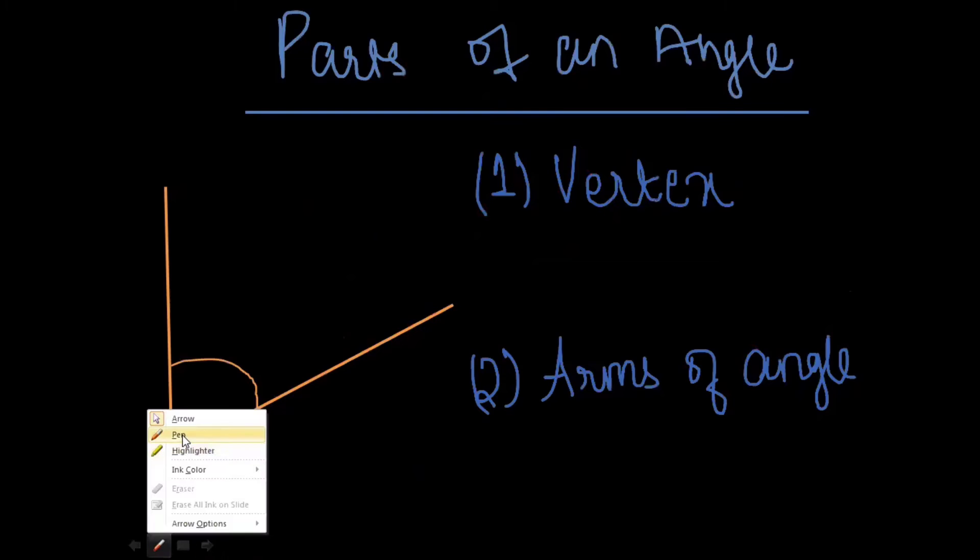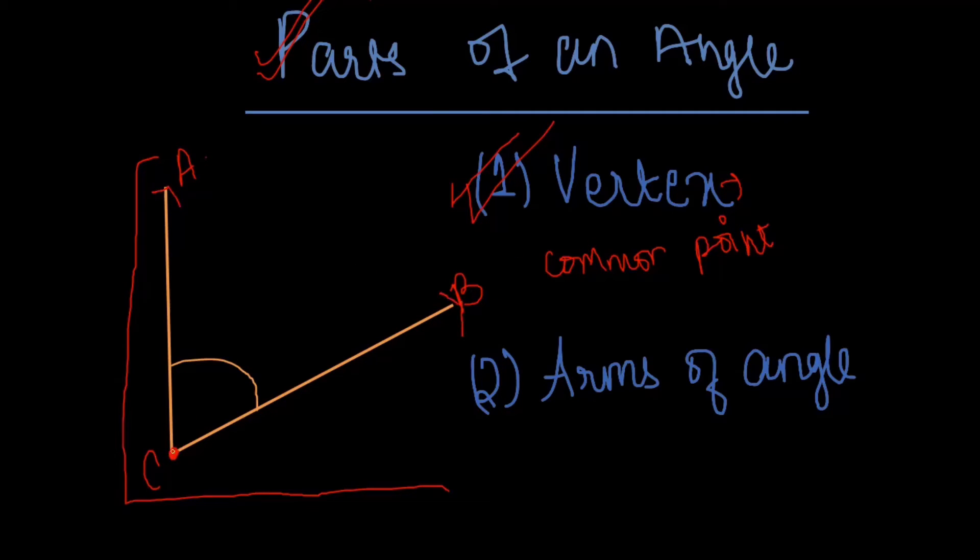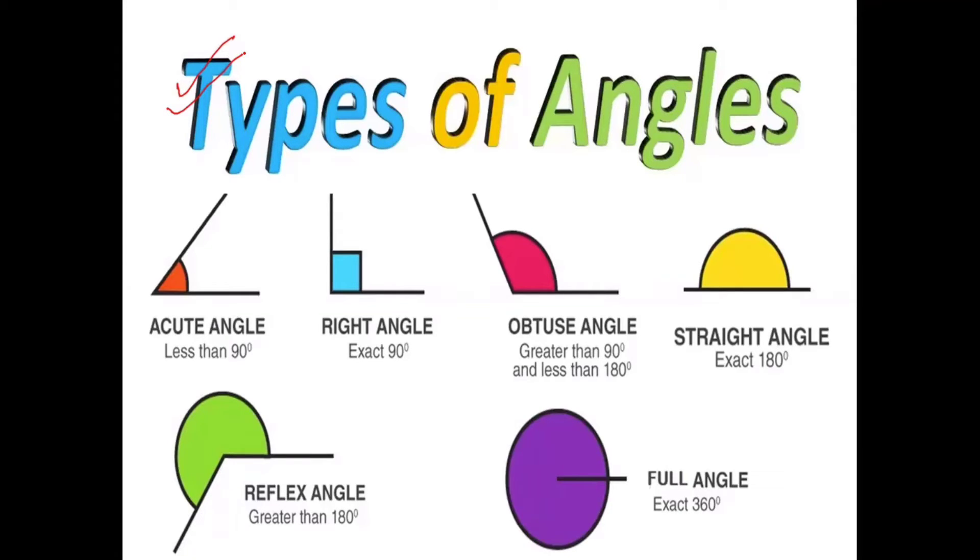So now let's learn about the parts of an angle. There are two main parts: vertex and arms of the angle. Here I will show it with the help of an angle which I have drawn. Firstly I will start by naming this angle as A, B, and C. The vertex of this angle is point C, the common point where rays AC and BC meet. The arms of the angle are the rays AC and BC.